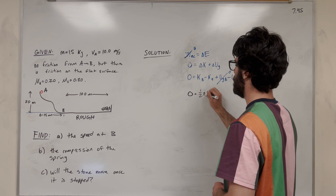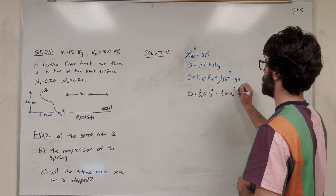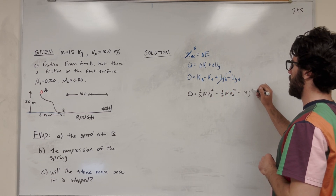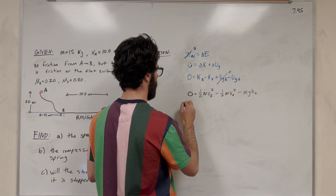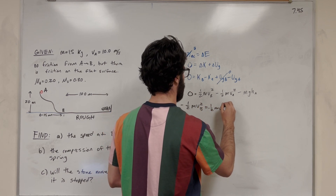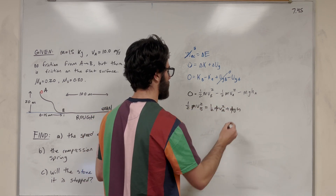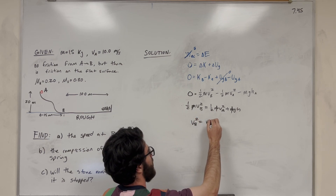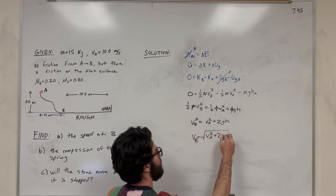Kinetic energy at B is one-half mass times velocity at B squared. Kinetic energy at A is one-half mass times velocity at A squared — we're solving for velocity at B. Gravitational potential energy at A is mass times gravity times height of A. Rearranging, everything has a negative sign and mass cancels throughout. Multiplying by two gives velocity B squared equal to velocity A squared plus two times gravity times height. Taking the square root gives us our formula.